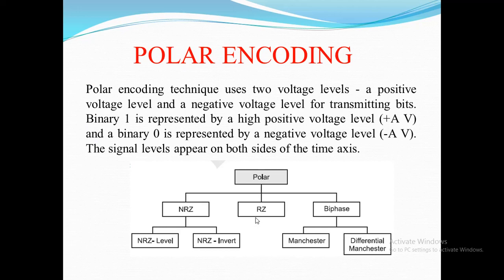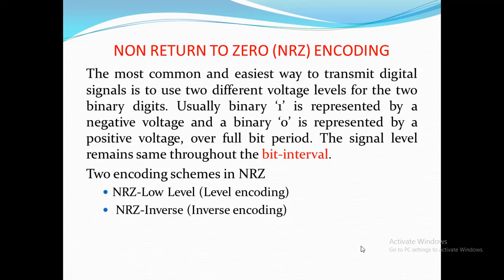Next is polar encoding, which uses two voltage levels: one positive and one negative. Binary 1 is represented by high (positive) voltage and binary 0 is represented by negative voltage. The categories of polar encoding are: Non-Return to Zero (NRZ) and Return to Zero (RZ), and Biphase. NRZ further has NRZ-Level and NRZ-Inverse, while Biphase includes Manchester and Differential Manchester encoding.